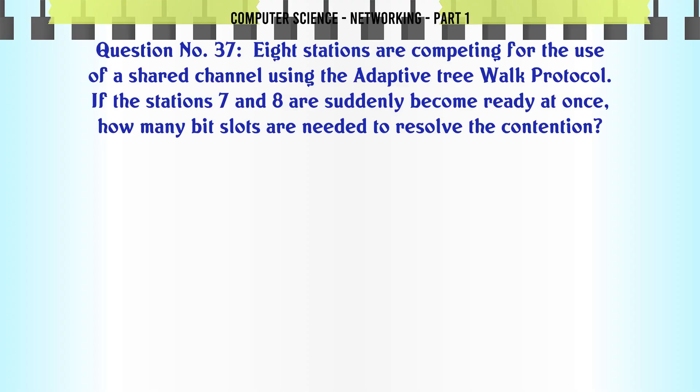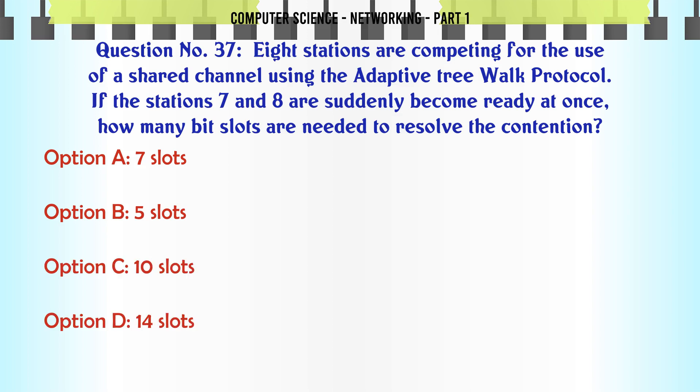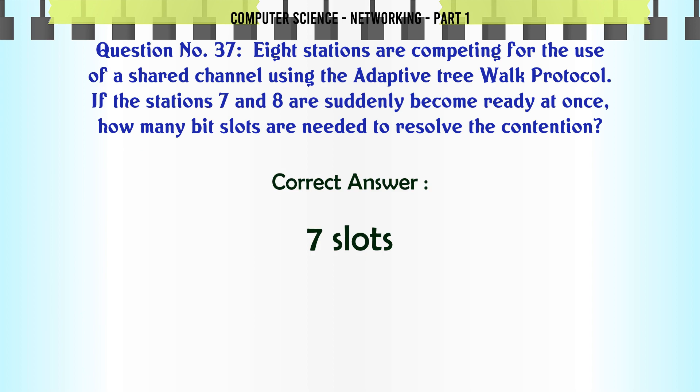8 stations are competing for the use of a shared channel using the adaptive tree walk protocol. If stations 7 and 8 suddenly become ready at once, how many bit slots are needed to resolve the contention? A. 7 slots. B. 5 slots. C. 10 slots. D. 14 slots. The correct answer is: 7 slots.